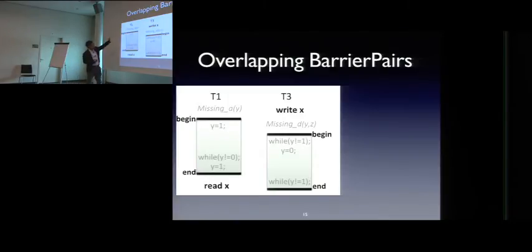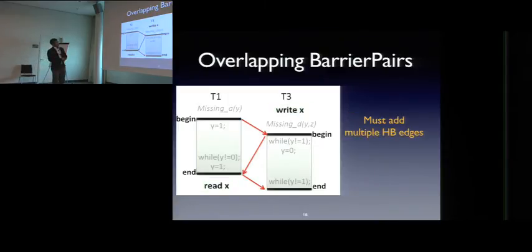Let's look at two barrier pairs. In this case, these two barrier pairs are overlapping in time, not only on the address, but in time. So they both access y, but also there are some time overlapping between these barrier pairs. So how do you introduce happens-before edges between them? You cannot simply add happens-before from begin to begin, or from end to end, because otherwise, you can still report a race on read x and write x. But this is a false positive. So in this case, we have to add multiple happens-before edges between overlapping barrier pairs.